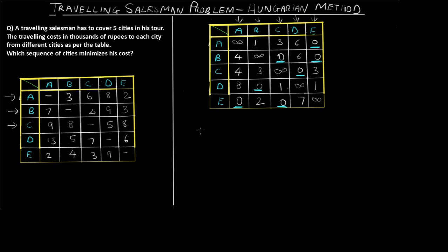Trying zero assignment: assign C to D (value 0), then D to B (only zero in row D), then B to E (since C is already covered), then E to A (since C is covered), then from A the only zero leads to E — but E is already visited. So this sequence does not give a valid complete tour using only zeros.